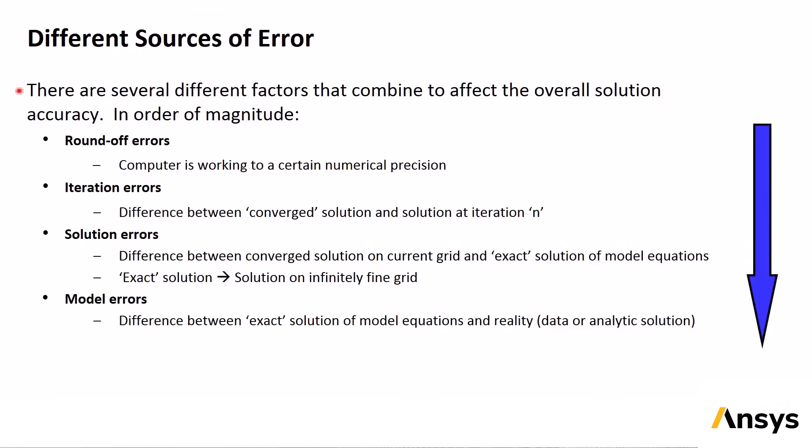Our first topic is the different kinds of errors that can affect CFD simulations. Several different factors can affect the overall solution accuracy, with the items becoming more significant the further down the page we go. Errors include round-off errors, which are related to the precision of the computer's arithmetic operations, and iteration errors, which are the difference between the solution at a particular iteration n and a converged solution. There are also solution errors, which are the difference between a converged solution on the grid that you're using and the exact solution of the model equations, which is what the solution would be on an infinitely fine grid.